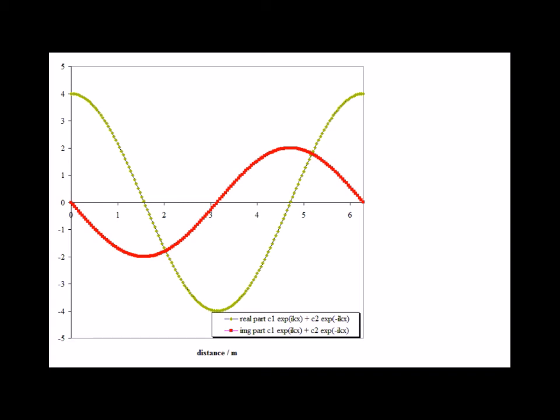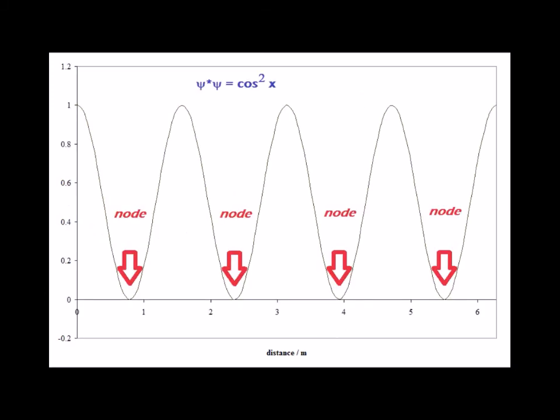Here is the probability density function for the wave function e to the i kx plus e to the minus i kx. The imaginary part is shown in orange. The regions where the probability drops to 0 are called nodes. They are also the areas where the wave function crosses through 0.